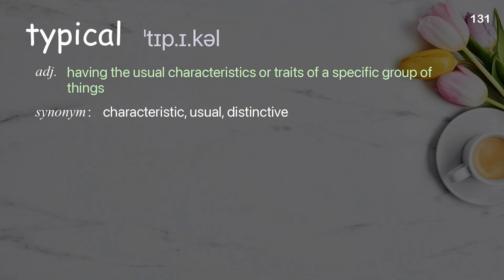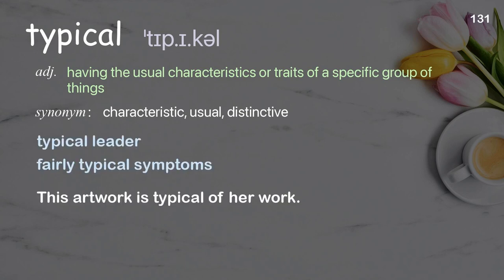Typical: having the usual characteristics or traits of a specific group of things. Examples: Typical leader. Fairly typical symptoms. This artwork is typical of her work.